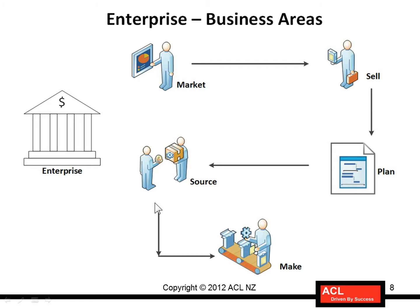In terms of business areas, you've got marketing — also called CRM or customer relationship management — as one area. The second area is sales, which involves taking the customer order, picking from warehouses, packing, shipping, sending an invoice, receiving payment, and posting it to your journal ledger. Then you've got the planning side, looking at past sales to make future plans, then procurement or sourcing, and finally manufacturing. These are the functional business areas at a broad level.